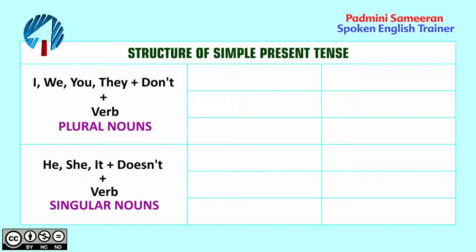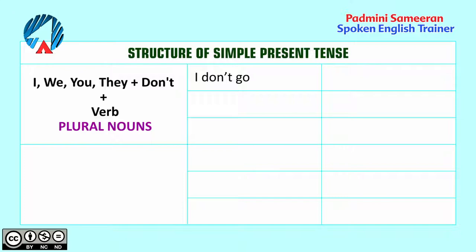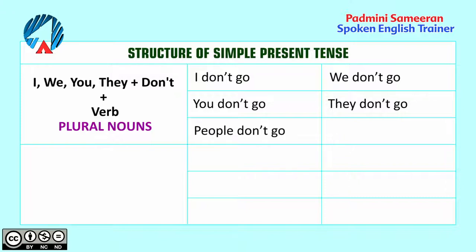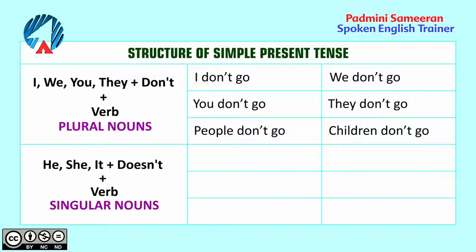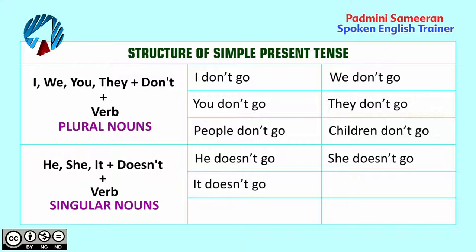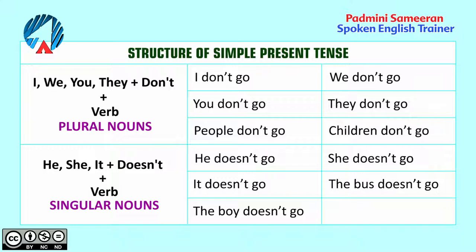Let's look at how it's used. I don't go, we don't go, you don't go, they don't go, people don't go, children don't go — with all these we use 'don't'. And with he, she, it: he doesn't go, she doesn't go, it doesn't go, the bus doesn't go, the boy doesn't go, the child doesn't go. So here we use 'doesn't'.